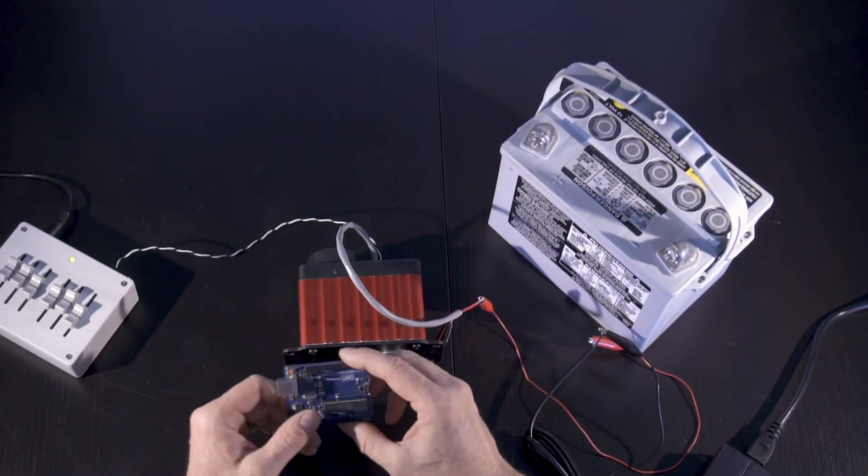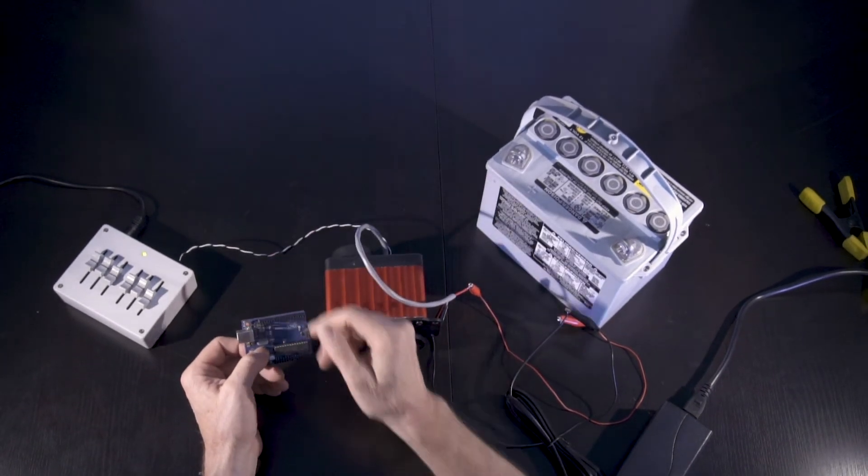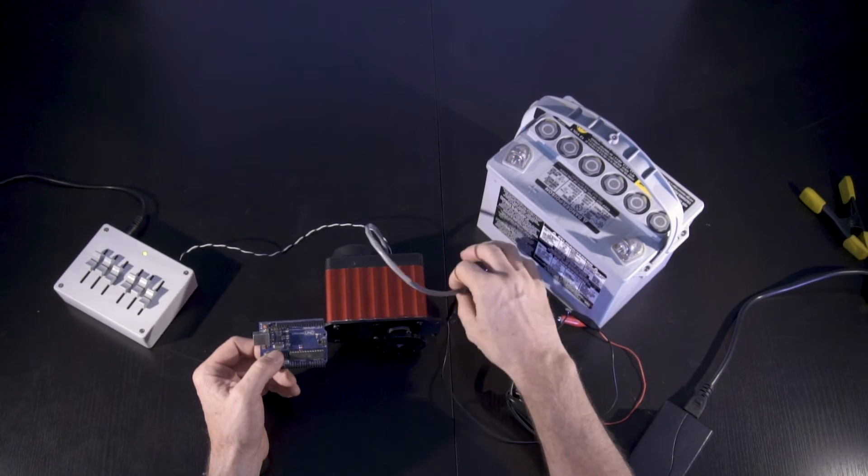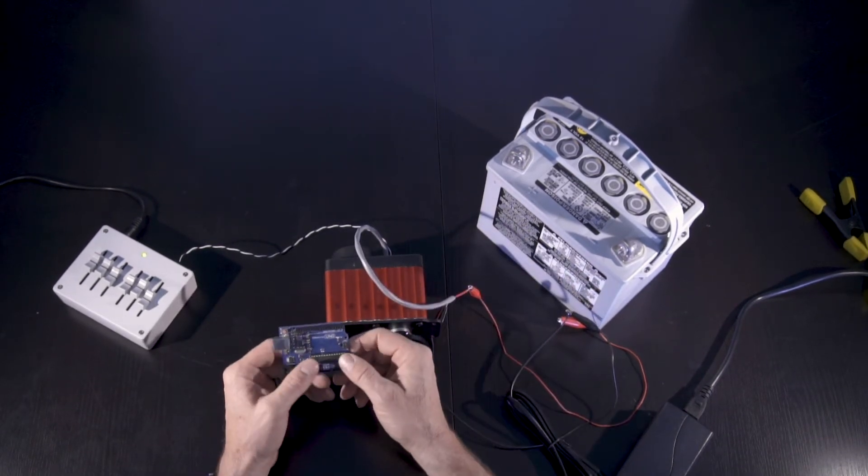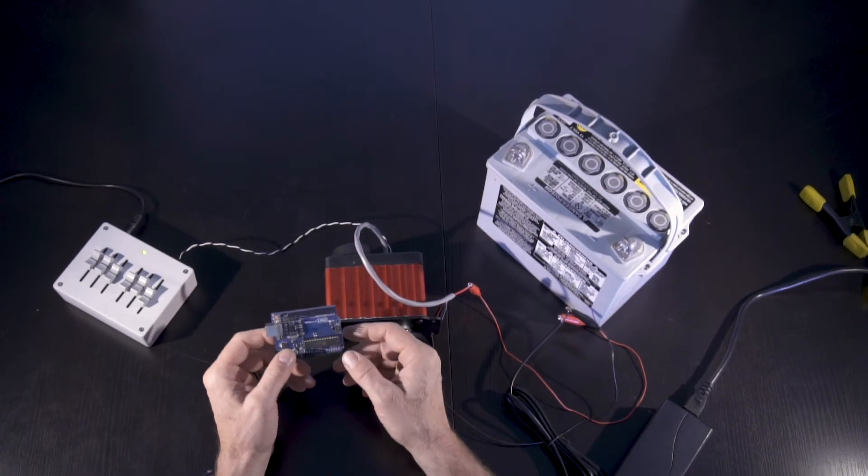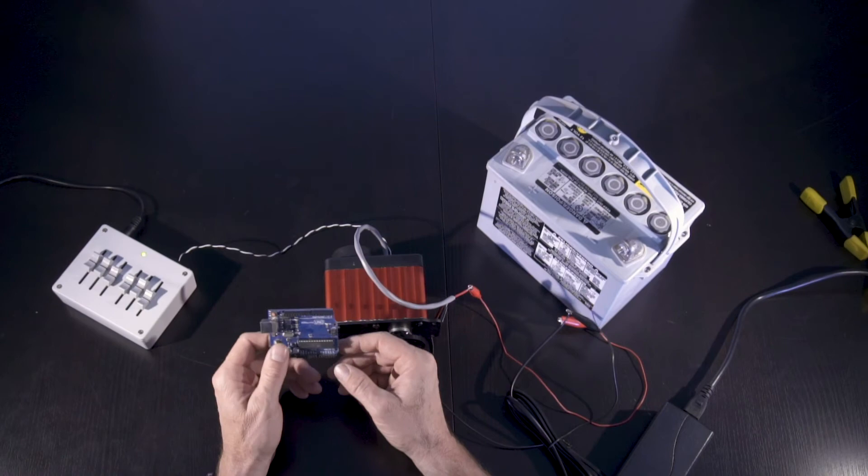You just provide a PWM line and ground into the servo and then you still provide the 12 volt high current for the motor power. And we've had good success with that using the standard servo libraries that are provided in the Arduino IDE.